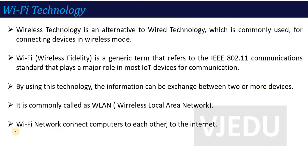By using Wi-Fi technology, information can be exchanged between two or more devices. It is most commonly known as a Wireless Local Area Network (WLAN). Through a Wi-Fi network, you can connect different computers, laptops and mobiles, and connect your laptop or computer to the internet. These are some of the key points related to Wi-Fi technology that are useful for exam purposes.